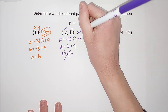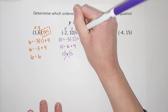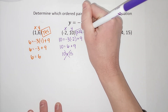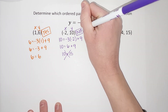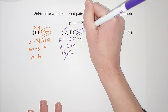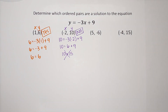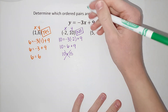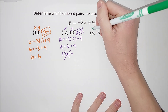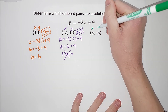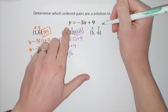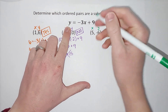We end up with 10 equals 15, which is not true. So no, negative two, ten is not a solution for this equation — it's a solution for a different one, but not for this one.